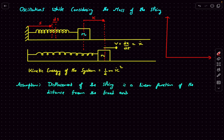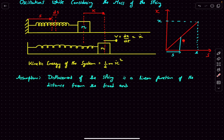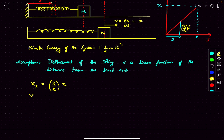We can show this with the help of a graph. The displacement as a function of s: the displacement of the end attached to the wall is zero, and the displacement of the end attached to the mass is x. The displacement of the element at distance s is the slope of this line times s, which comes out to be (x/L)·s. So the element at distance s from the wall displaces by (x/L)·s, and its velocity is (s/L)·ẋ, where ẋ is the velocity of the block.